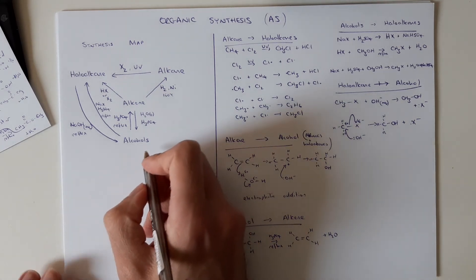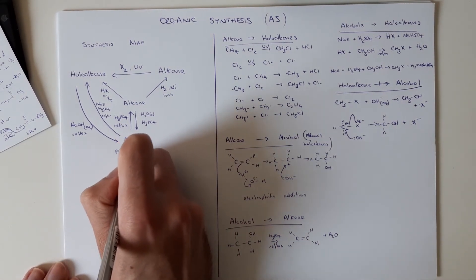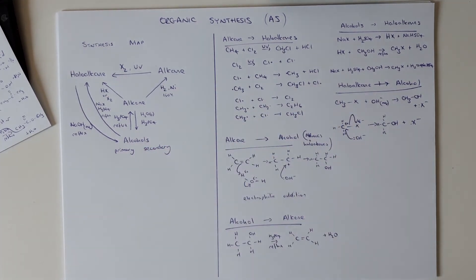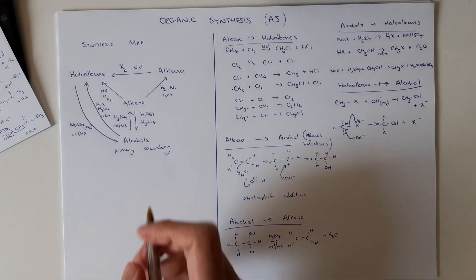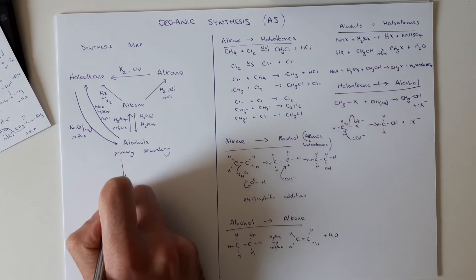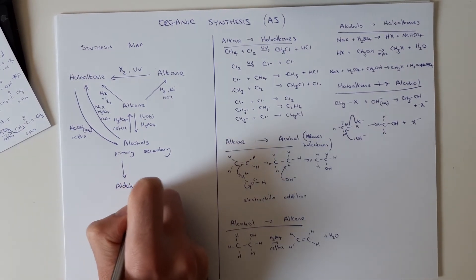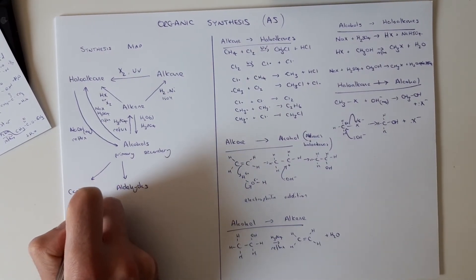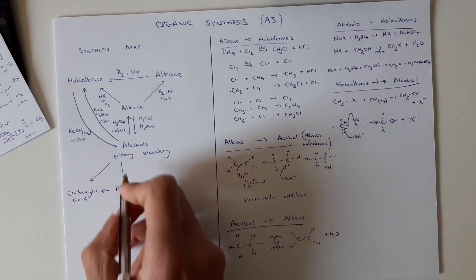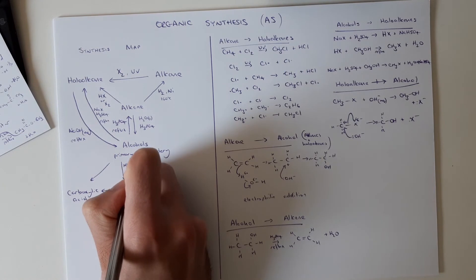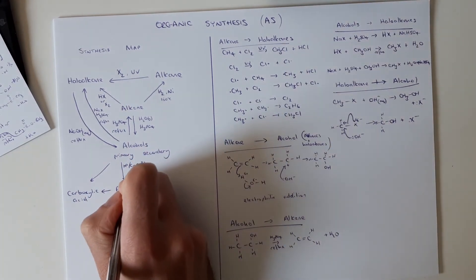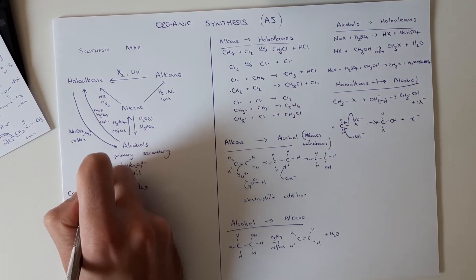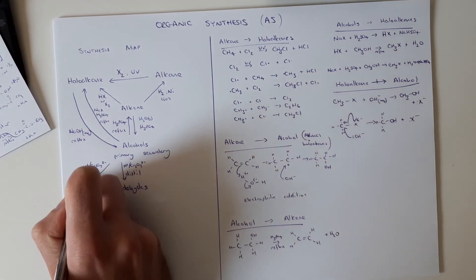After that, alcohols. We can have two different types of alcohols from reactions we look at, primary to secondary. Obviously there's tertiary as well, but they don't undergo the reactions we want to look at. And we're going to form from our primary. We can go to aldehydes. We can also go to carboxylic acids. And we can go from aldehydes to carboxylic acid with the same reaction. For this we need acidified dichromate. To an aldehyde we're going to distill. Same reaction to a carboxylic acid, but this time we're going to reflux.